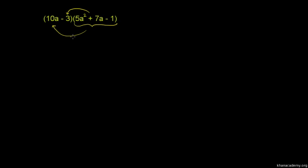So let's just do that. 10a times 5a squared plus 7a minus 1. That's that right over here. And then we can have minus 3 times 5a squared plus 7a minus 1. And that is this distribution right over here.